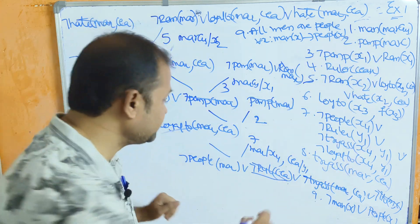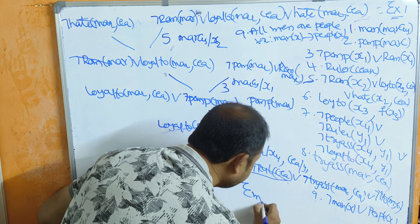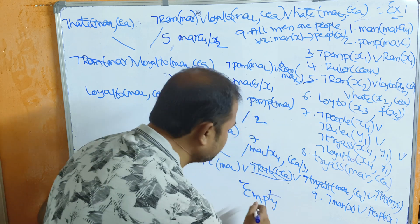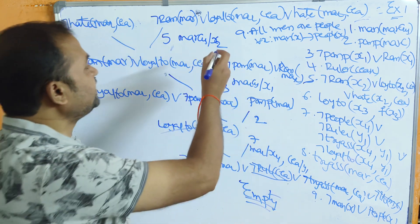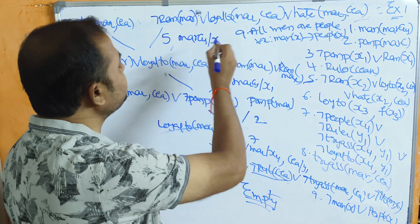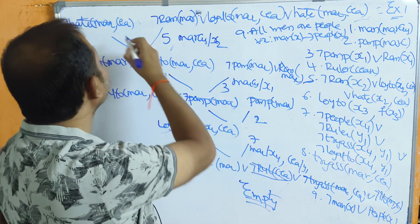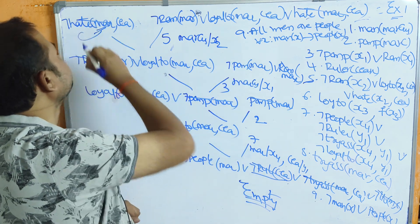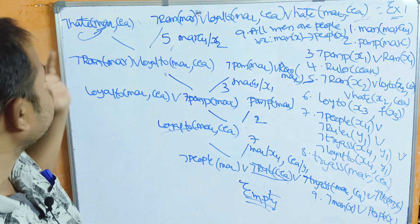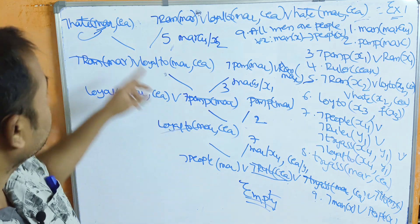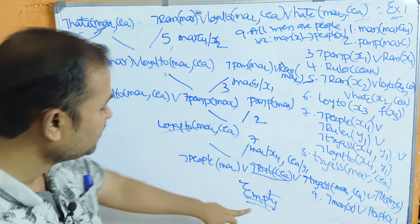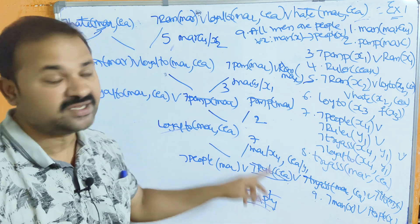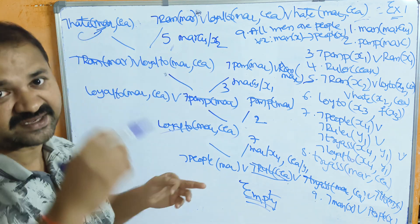Negation man(marcus) cancels with man(marcus) from the first clause. The result is the empty clause, which means the proof is complete. We can conclude that Marcus hates Caesar — the original statement is correct. We proved it by taking the negation and deriving a contradiction leading to the empty clause.